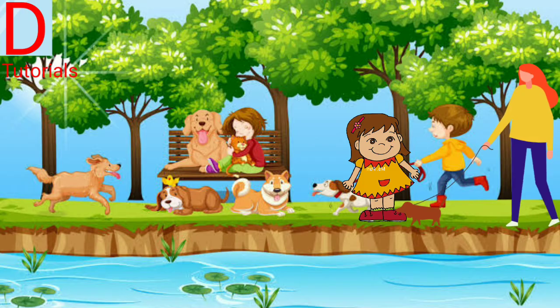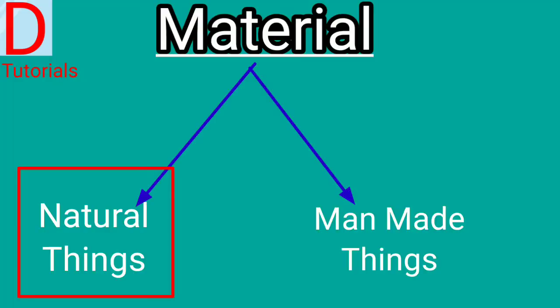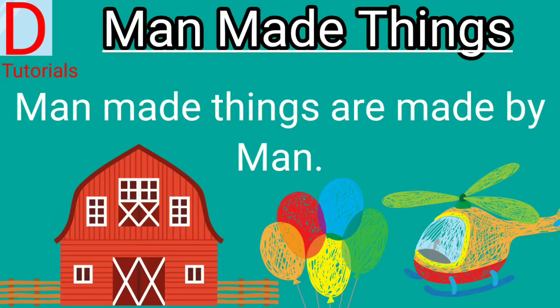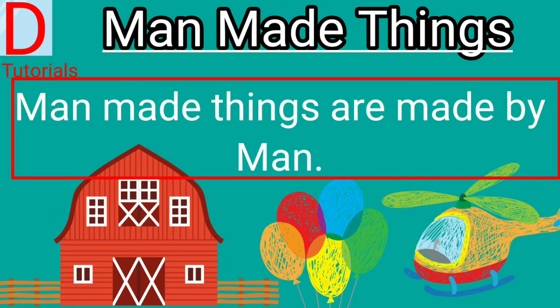Look Kids, there are many things around us — some of them are natural things and some of them are man-made. Natural things are created by nature without interference of man. Man-made things are made by humans.